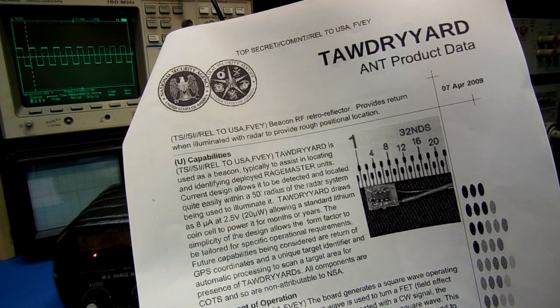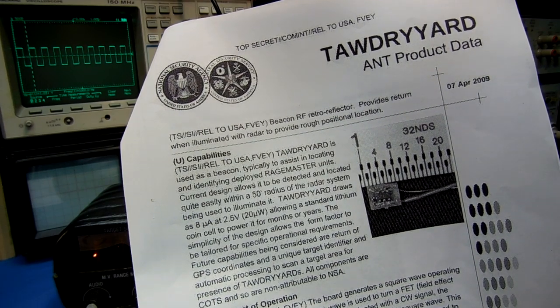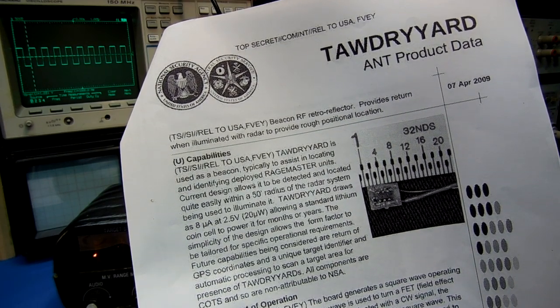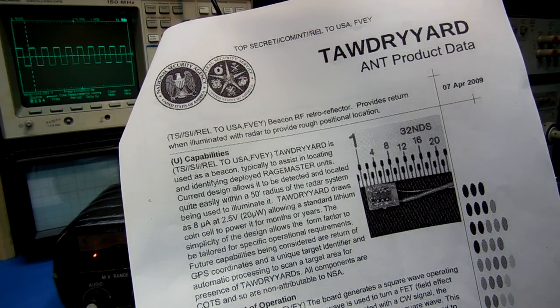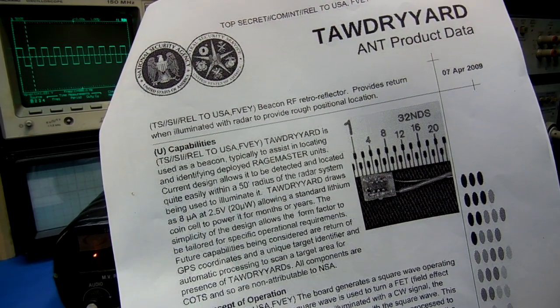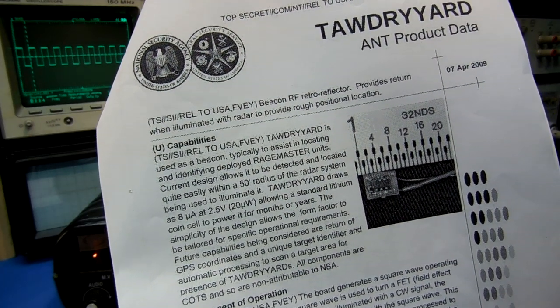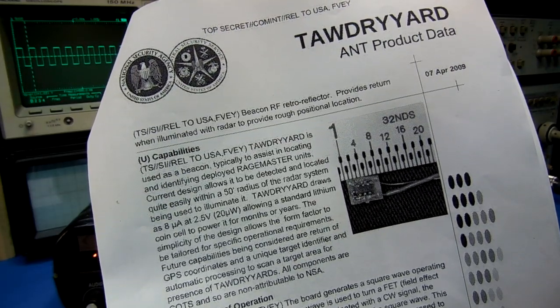It also says to assist in locating the rage master units. I'll be going over the rage master units in a separate video. Those are providing essentially a bug on a VGA video monitor. Those don't have their own clock signals, so by hiding this device in like the targeted office building or whatever, it lets you know where the rage master units are located.